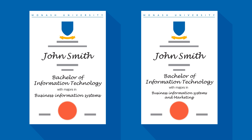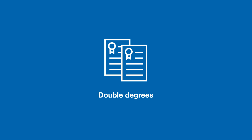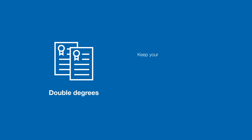You can also study the Bachelor of Information Technology as a double degree. Double degree courses give you the benefit of studying towards two degrees at the same time, enabling you to keep your options open, develop expertise in different but complementary areas, or simply to pursue two areas of interest comprehensively.